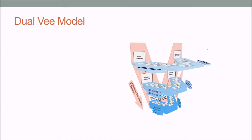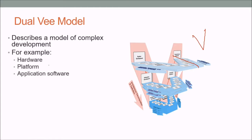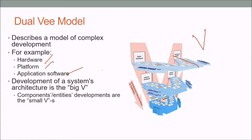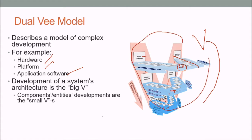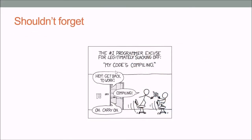The Dual V model describes complex development for hardware, platform, and application software. There is a large V representing the system architecture and development, and smaller Vs representing component, entity, and individual developments. It shows the interaction and consequence of developing a complex system and a system of systems.